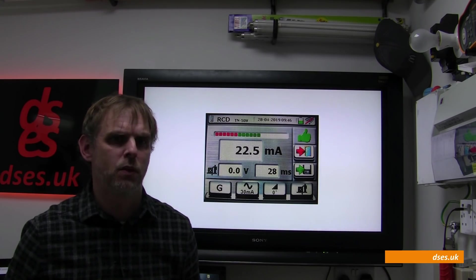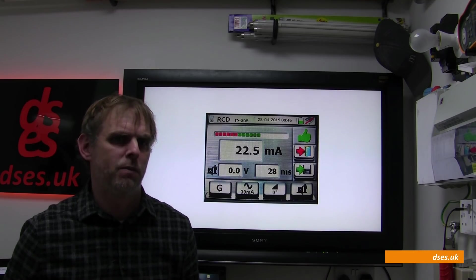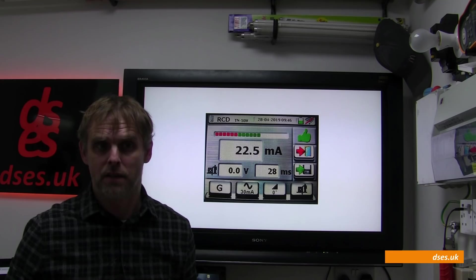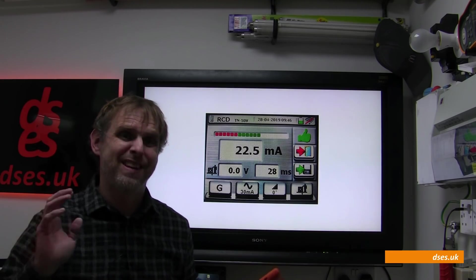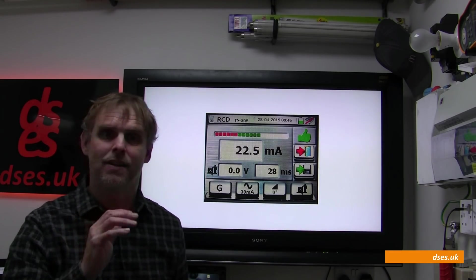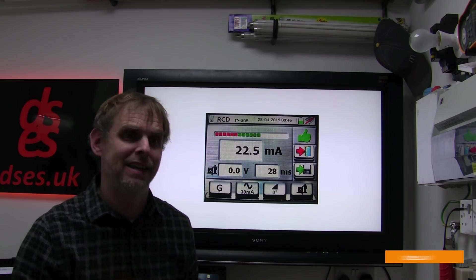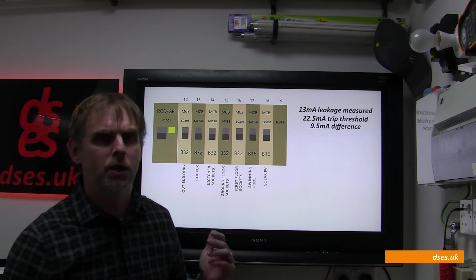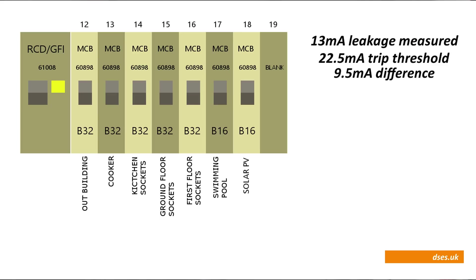This is a 30 milliamp RCD, so it's going to trip somewhere between 20 and 30 milliamps. I'd prefer it to be tripping a little closer to the upper limit, but I wouldn't say that this RCD is too sensitive. So although we haven't experienced the fault ourselves while at site, we know that it'll only take an additional leakage current of about 9.5 milliamps in order to trip this RCD for it to reach its threshold and to click off the power to all these circuits.